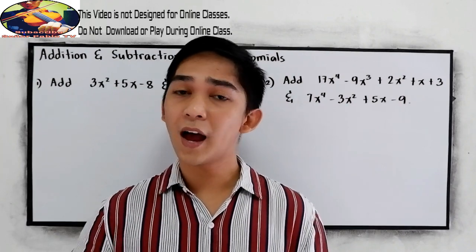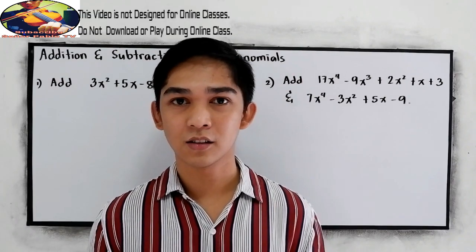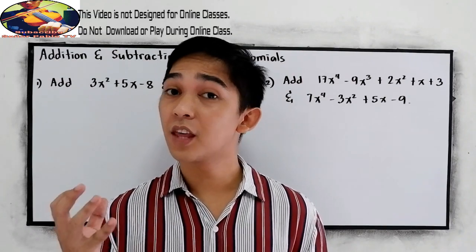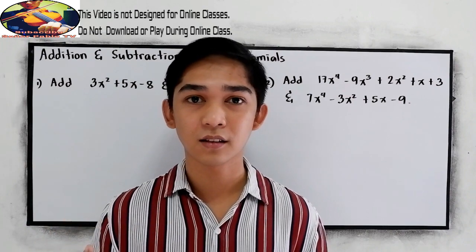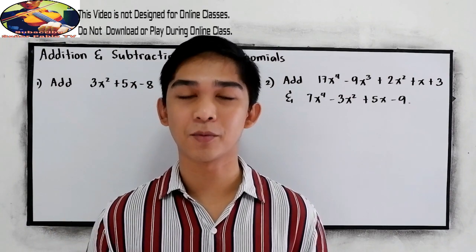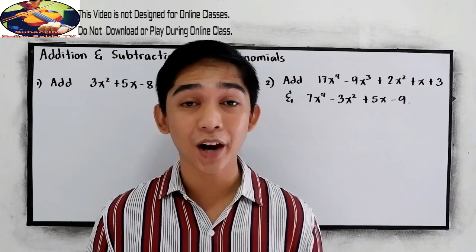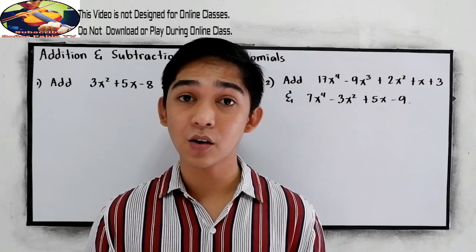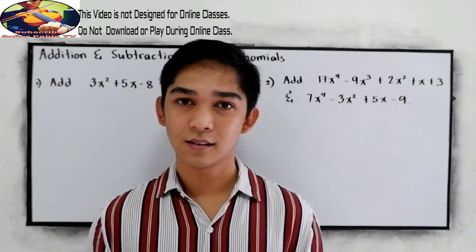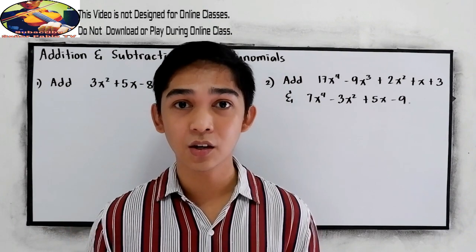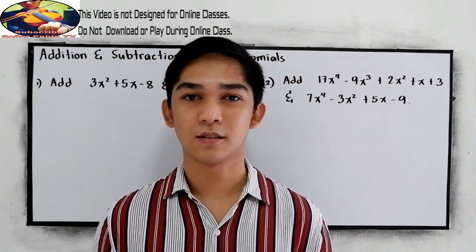So for addition and subtraction, we can only add or subtract if they have the same degree or exponent and variable. Again, we can only add or subtract if the polynomial — if the term of the polynomial — has the same degree or variable.